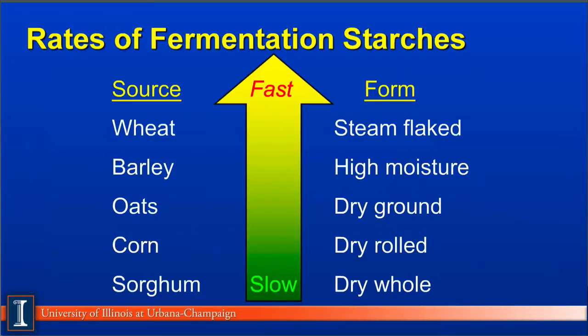This slide shows the relationship of how fast or slow starches will ferment depending on source and form. The slow starches are sorghum and corn, where the really rapid ones are wheat and barley. Processing also changes the rate: slow carbohydrates would be dry, whole, or rolled grains versus fast ones, which would be high moisture and steam flake. So you can see how managers can vary source and form to dictate rumen performance.